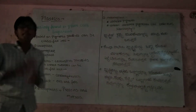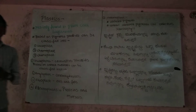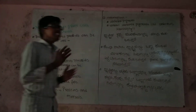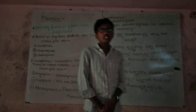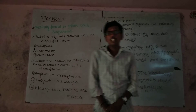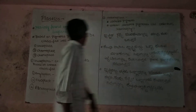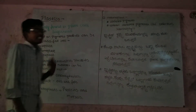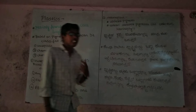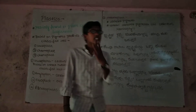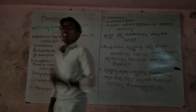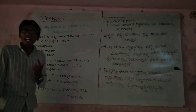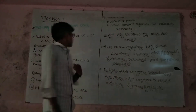I already discussed in a previous video the difference between plant cells and animal cells. Based on the pigment, plastics can be classified into three types: Leucoplast, Chromoplast, and Chloroplast.